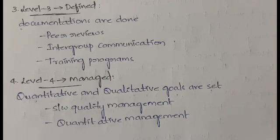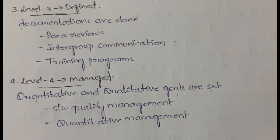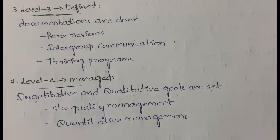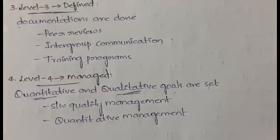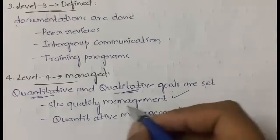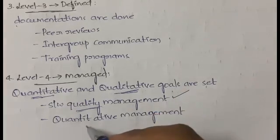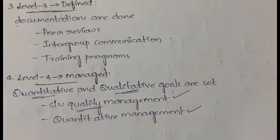In Level 3, all documentation-related work is done, along with reviews, intergroup communications, and training programs. Moving to Level 4, which is Managed: here quantitative and qualitative goals are set and managed. Quantitative means measuring output units produced; qualitative refers to the quality of output. Software quality management is done for qualitative goals and quantitative management for quantitative goals.